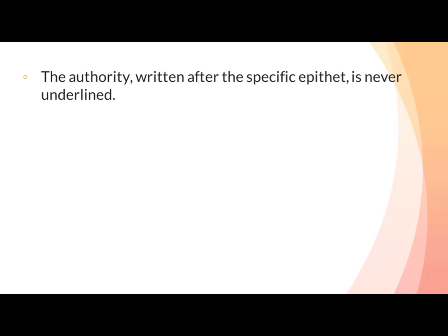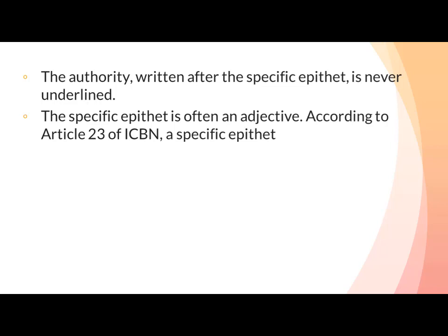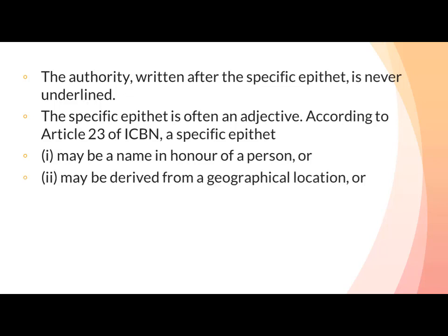The authority written after the specific epithet is never underlined. جو authority ہے species name کے بعد لکھتے ہیں اس کو نہ تو underline کریں گے اور نہ italic کریں گے۔ The specific epithet is often an adjective. According to Article 23 of ICBN, a specific epithet may be a name in honor of a person, or may be derived from a geographical location where the species was collected.